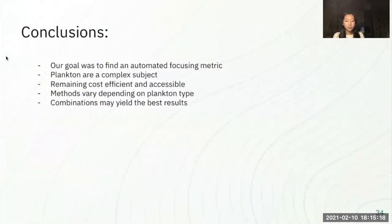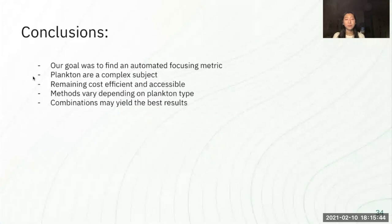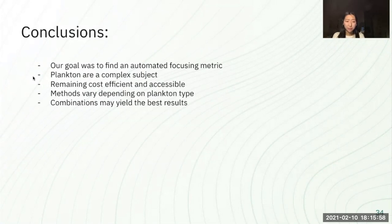In conclusion, our goal was to find an automated focusing metric, but plankton are a pretty complex subject and we had to remain cost efficient and accessible. We looked at focus metric performance across different classes to discover that it seems like focus metric performance varies based off which class you're looking at, and being more specific about which metric you use might yield better performance even when dealing with subpar image quality. Combinations may yield even better results, but that is for future research.